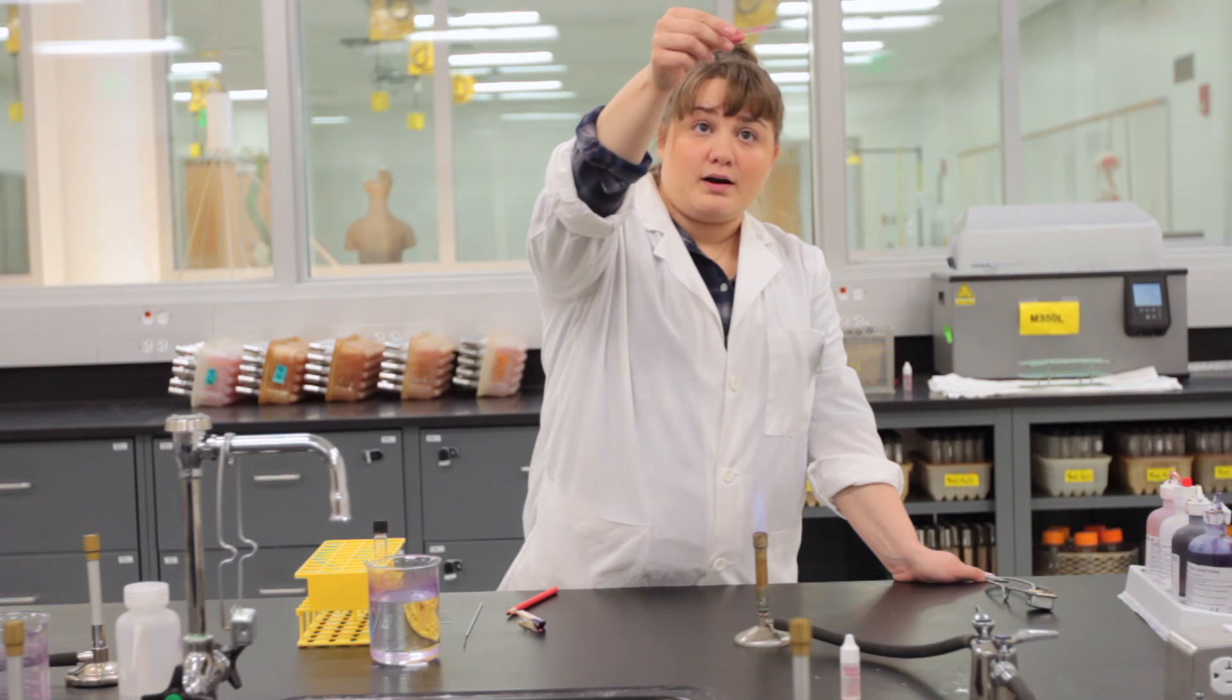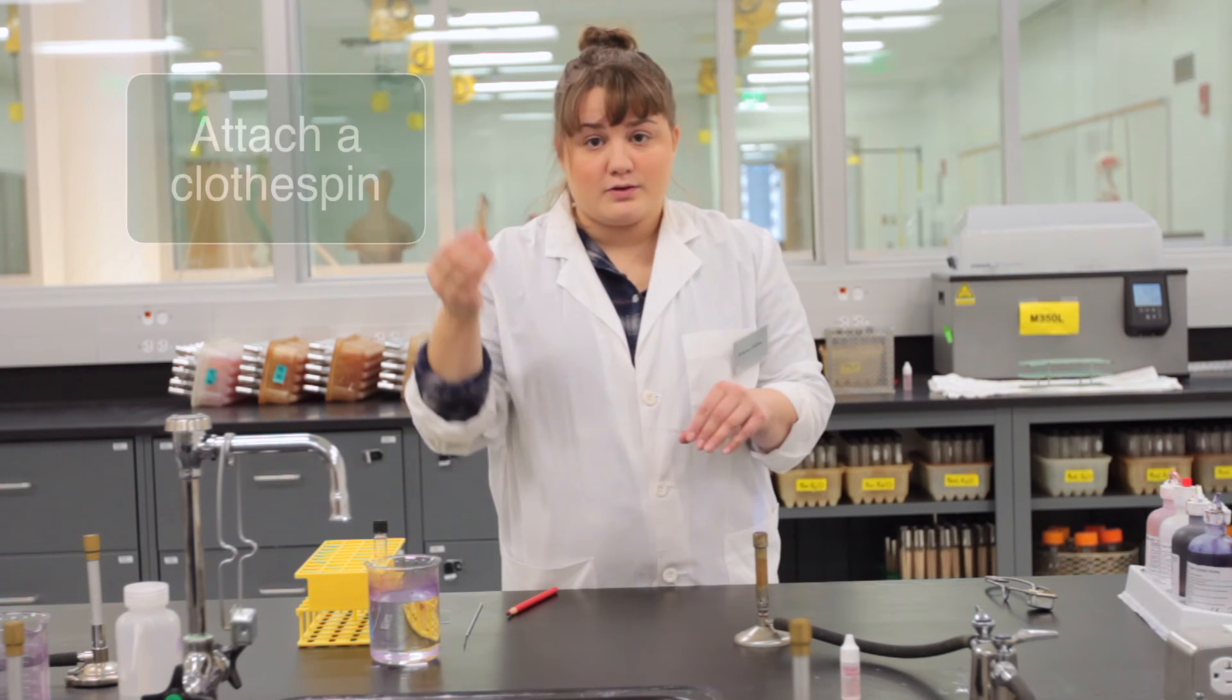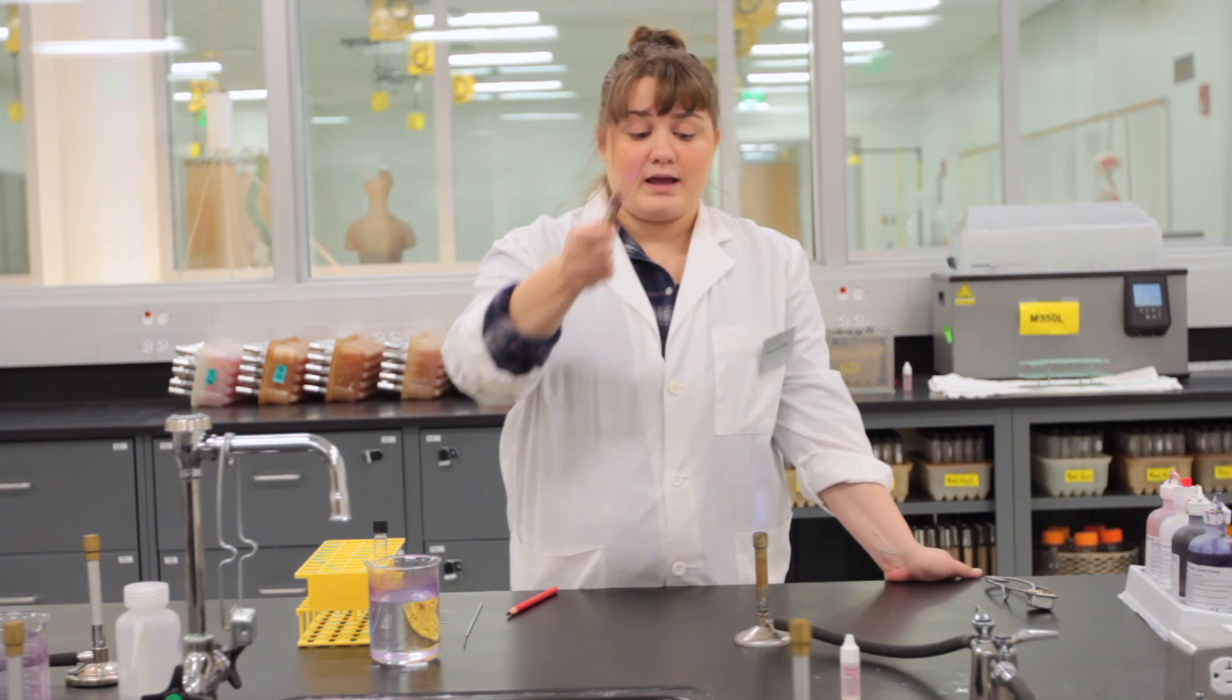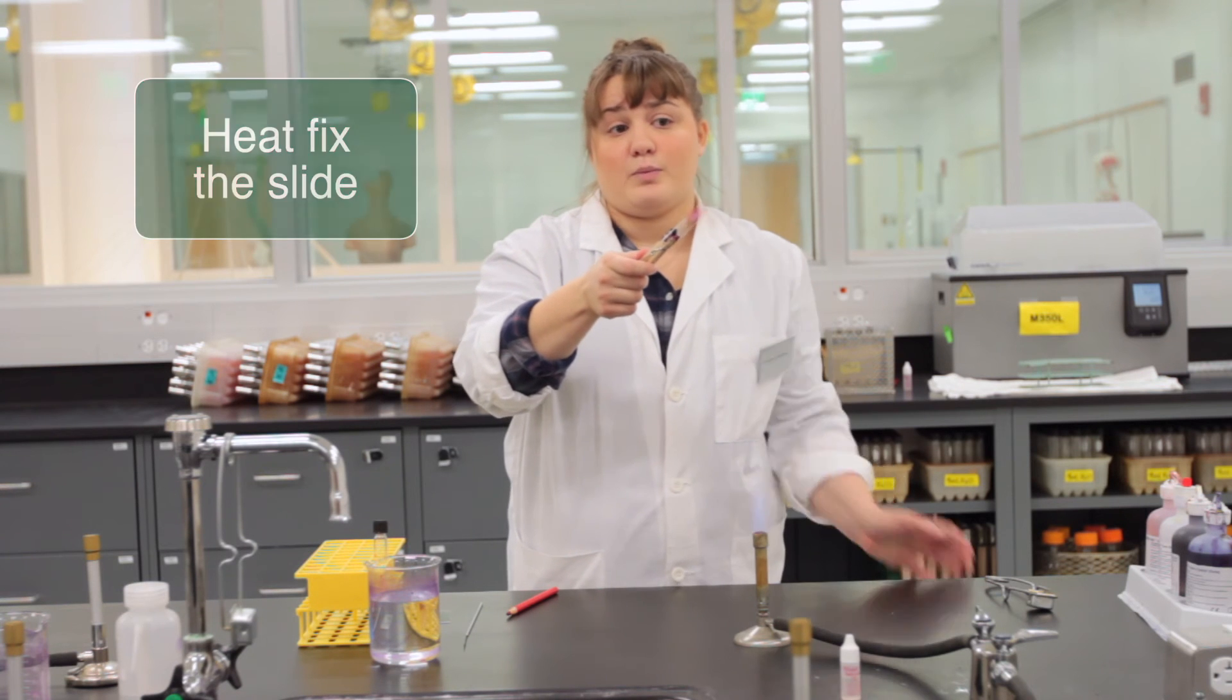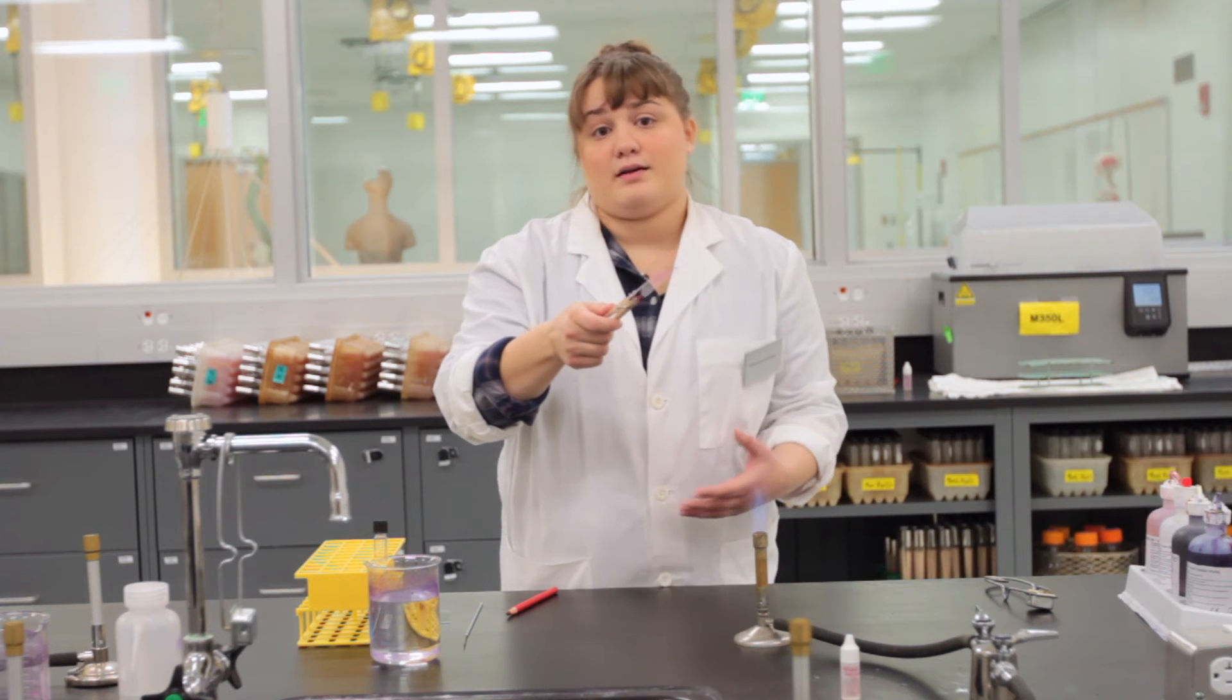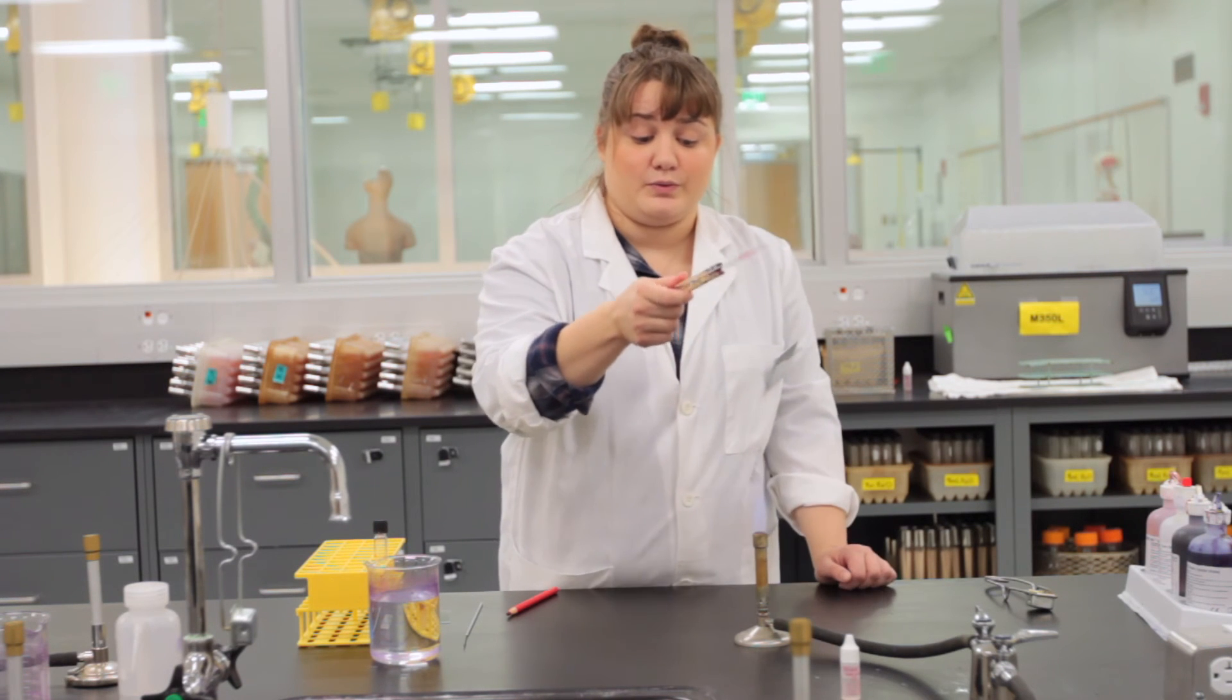Once the water has evaporated and the slide is dry, you will take your clothespin, attach it to the end of the slide, and you will send the slide through the flame three times to heat fix the bacteria to the slide. By heat fixing we are adhering the bacteria to the slide and it allows us to go through any staining procedures that we want to go through.